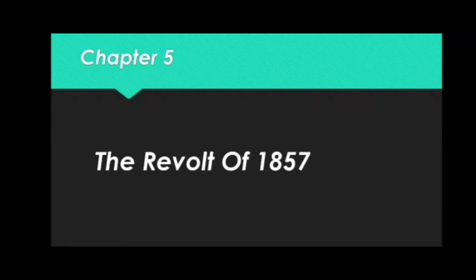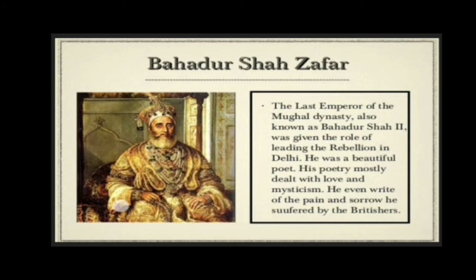Welcome back. Today we are going to study Chapter 5: The Revolt of 1857. By 1856, most of the Indian subcontinent had been brought under the rule of the East India Company. However, various sections of people were badly affected by the oppressive policies of the British, so many revolts took place. The last Emperor of the Mughal dynasty, Bahadur Shah II, was given the role of leading the rebellion in Delhi. He was a beautiful poet whose poetry mostly dealt with love and mysticism.